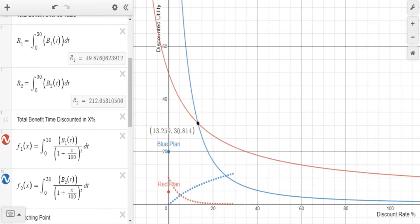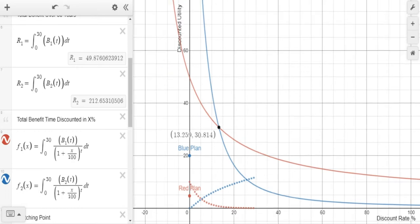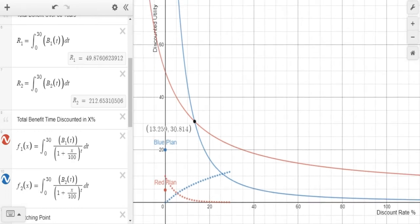Now, as we can see right here, if our discount is pretty low, if it's below 13.259%, then it's clearly better to choose the blue plan, we're willing to wait to realize those future gains. But if you look at something like the red plan, if we have needs, if we're discounting the future much more substantially, such that we need it now, then the red plan will clearly be the superior plan to choose.